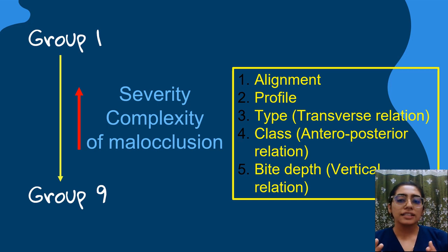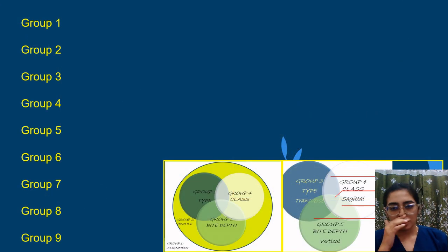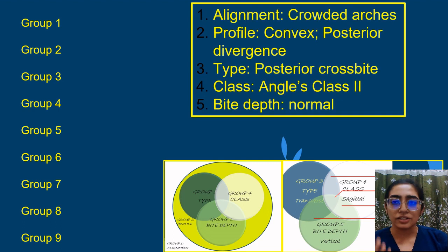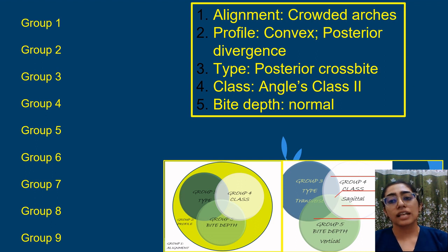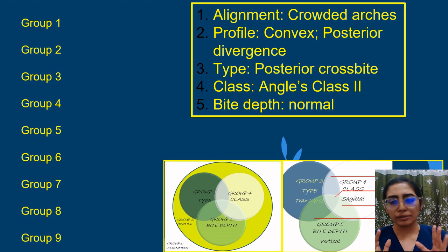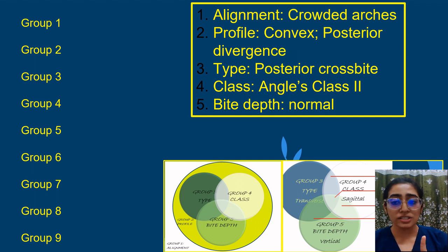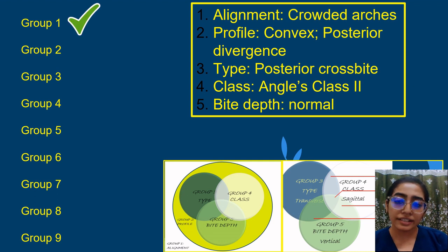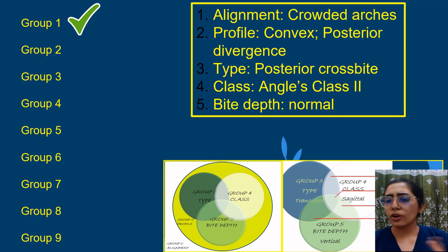Let's take an example to understand the classification better. The case involves a subject with crowded arches, a convex profile with posterior divergence, bilateral posterior crossbite, an Angle's Class 2 relation, but normal bite depth or overbite. For the first step — alignment — the arches are crowded, so there is a problem in alignment, classifying it in Group 1. For the second step — profile — it is convex with posterior divergence, classifying it in Group 2 as well.